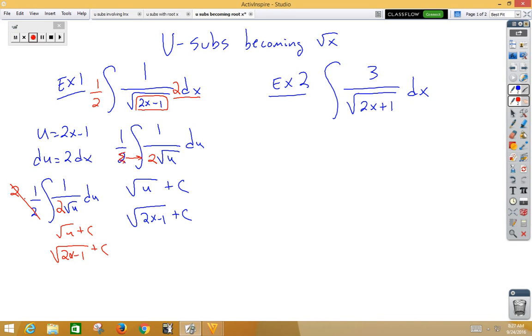Let's go again. In example 2, this 3 might cause me some pain and suffering, so I'm going to ship that one out to the front. If I do that, now I have a 1 on top as a placeholder. My u value is my inside function, 2x plus 1. My derivative would be 2dx.